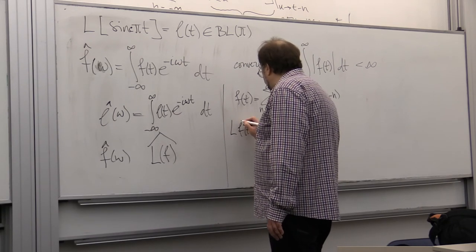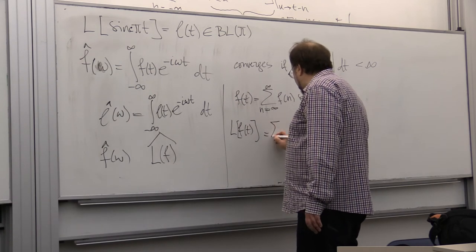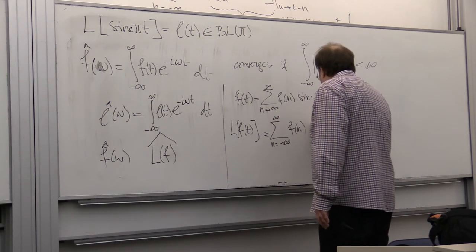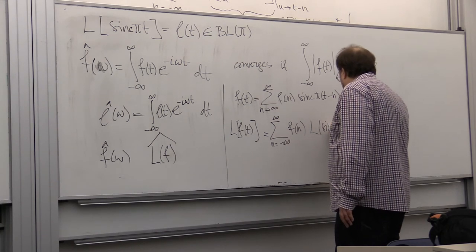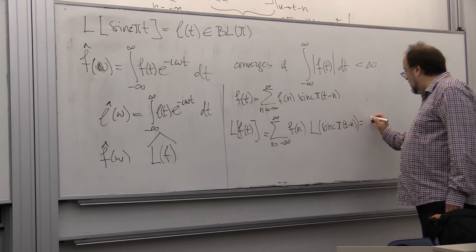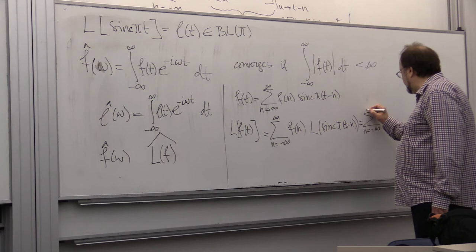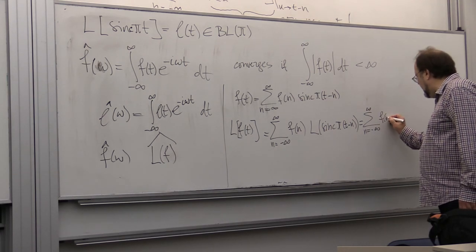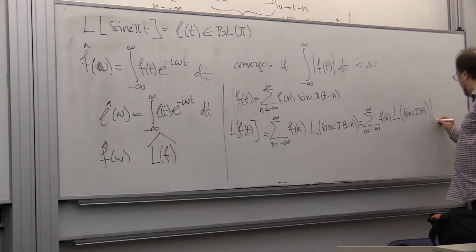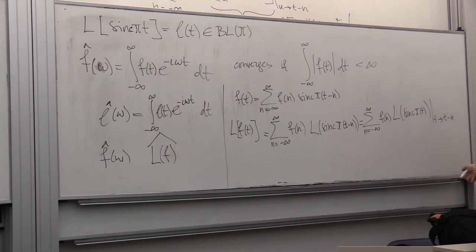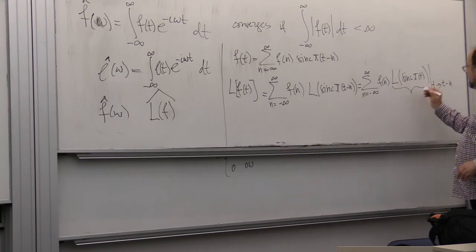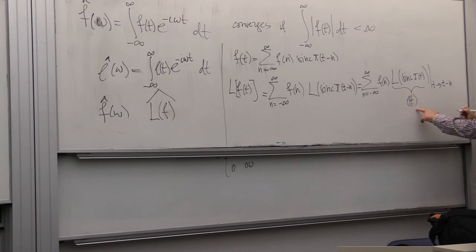This means that L(f(t)), as we saw, equals the sum from n equals minus infinity to infinity of f(n) times L applied to sinc(pi*(t minus n)), which equals the sum of f(n) times L applied to sinc(pi*t) evaluated at t minus n. But we know what this is — this is the impulse response l(t) evaluated at t minus n.